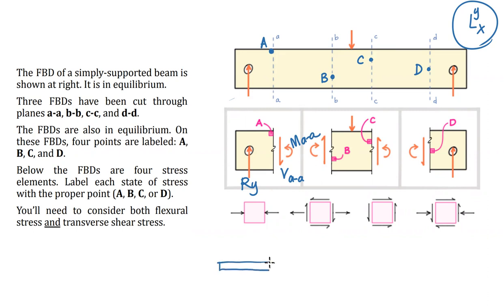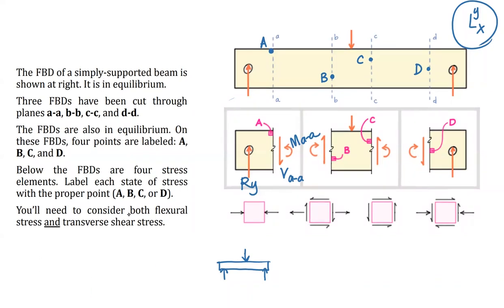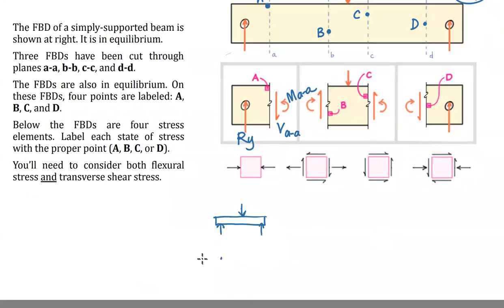So we know that this is essentially a simply supported beam like this. Here is my shear diagram, increase, decrease, back to zero. Here is my bending moment diagram, increases linear to a peak moment there at mid-span. So at that first section, right, I've got an internal positive shear force, that type of tendency, that type of tendency to shear the planes, and I've got a positive bending moment. So these type of arrows.